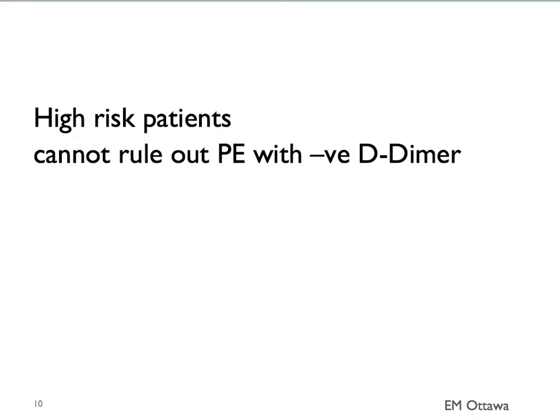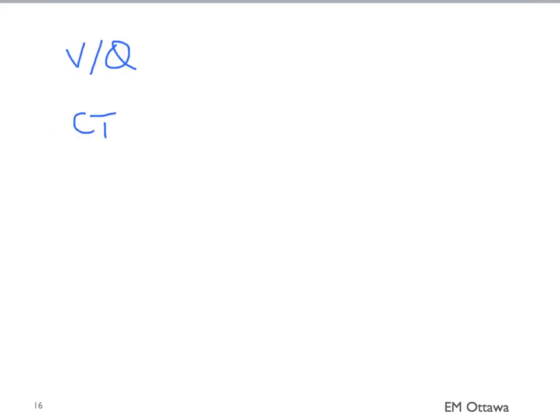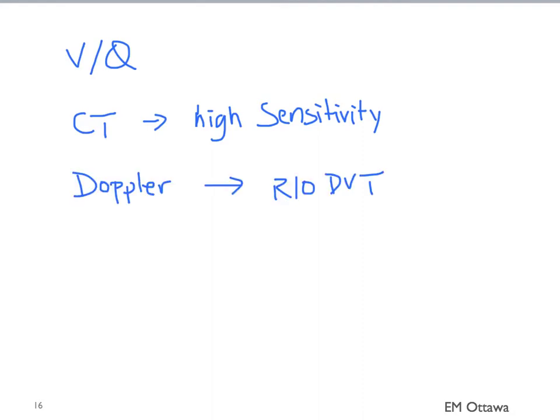High risk patients cannot be ruled out with a negative D-dimer. We need to go further into diagnostic imaging. The imaging choices include a VQ scan and a CT chest. A CT scan has very high sensitivity to rule out PE. However, this test is also not perfect. In patients with extremely high risk of PE, and if the CT scan is inadequate, sometimes we also add in Doppler ultrasound to see if there are any signs of DVT. This is fortunately a rather uncommon scenario, and it's best to discuss this with your staff.